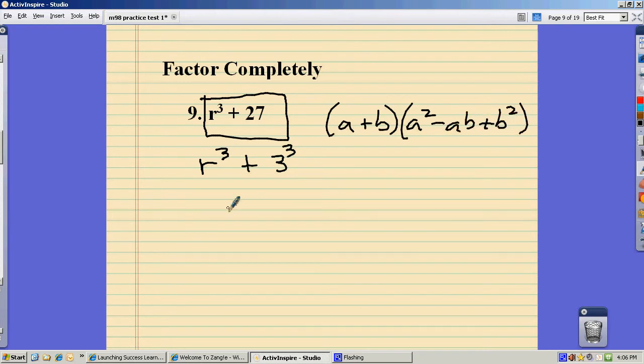So basically this is going to come out to be r plus 3, that quantity, times r squared, first one squared, opposite sign, first times second, plus last one squared.